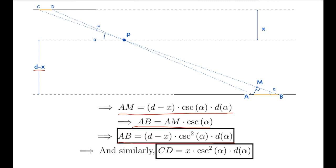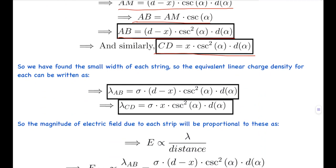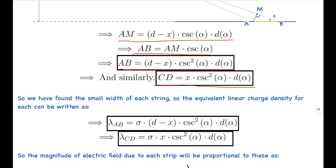Similarly, looking at the small triangle, AB equals AM times cosec(alpha), so AB = (d − x) cosec²(alpha) d-alpha. We needed to find this to get the width of strip AB, so we can find its equivalent linear charge density. Similarly for strip CD, using distance x, we get CD = x cosec²(alpha) d-alpha. The equivalent linear charge density for strip AB is lambda_AB = sigma(d − x) cosec²(alpha) d-alpha, and for strip CD, lambda_CD = sigma·x·cosec²(alpha) d-alpha.